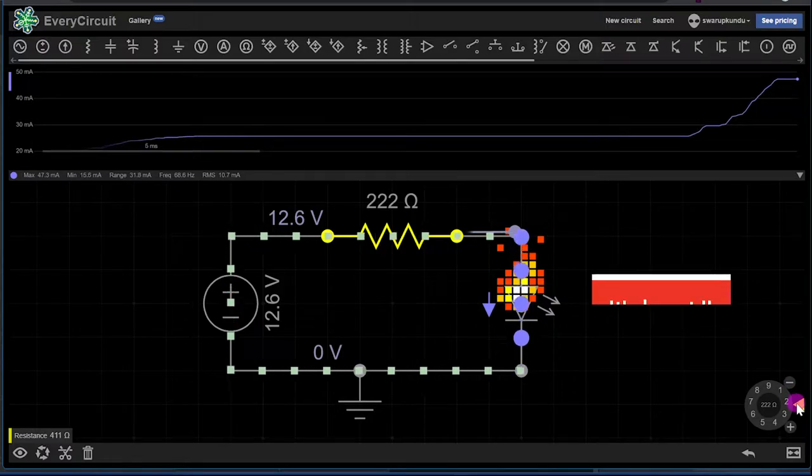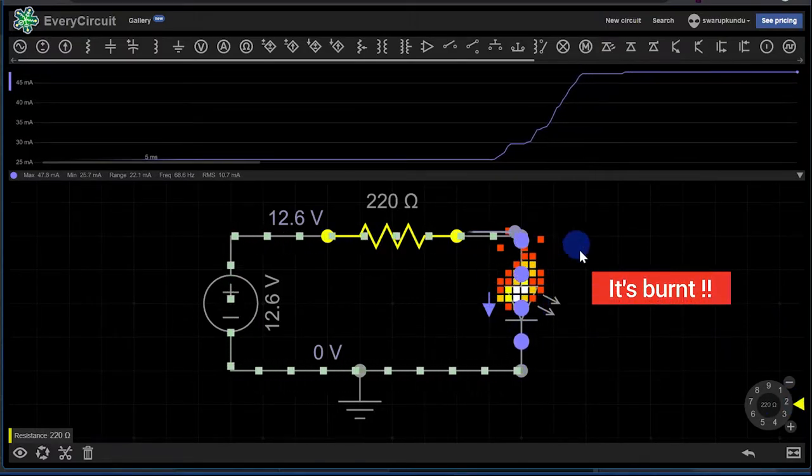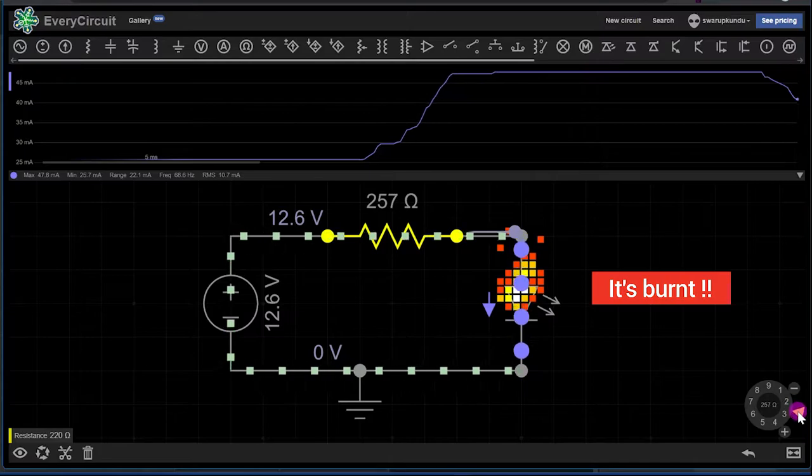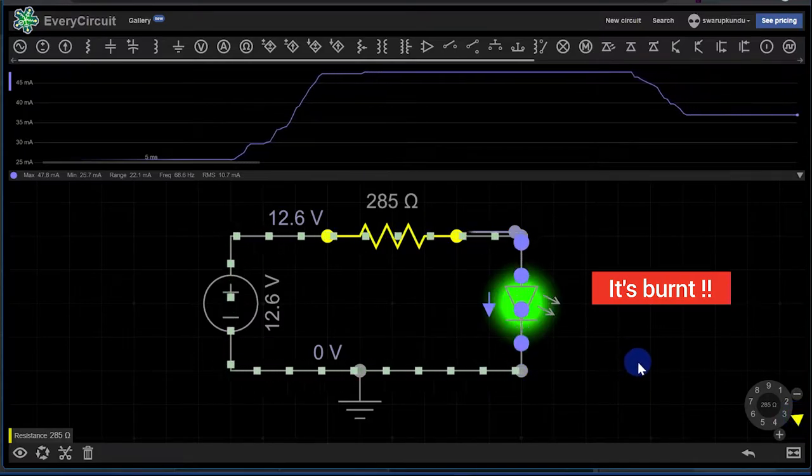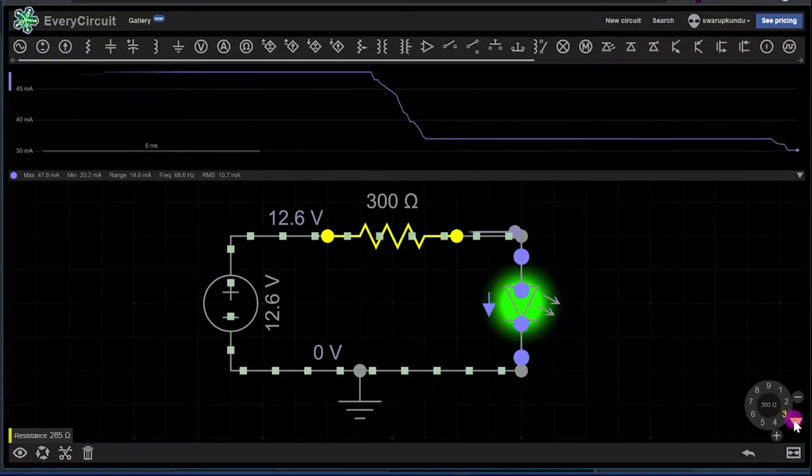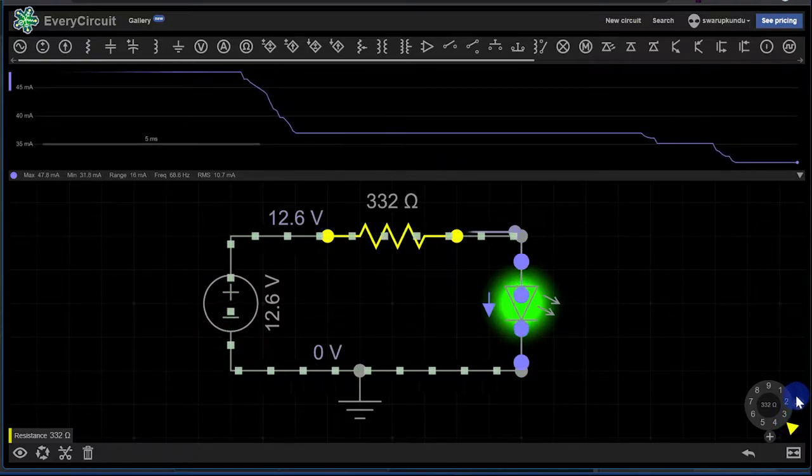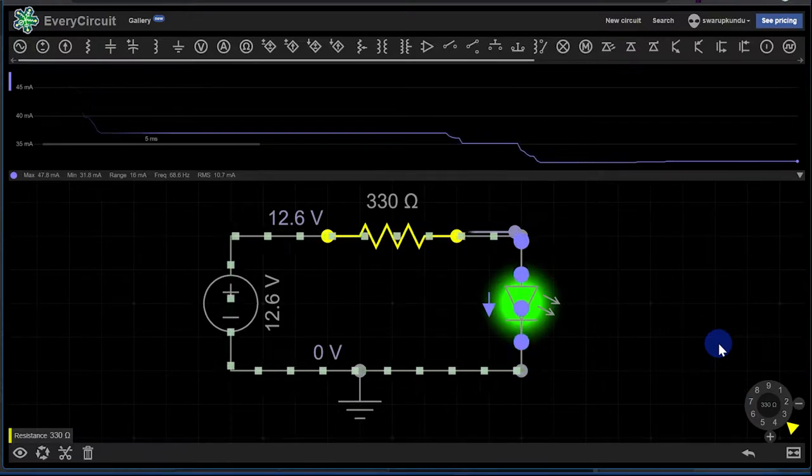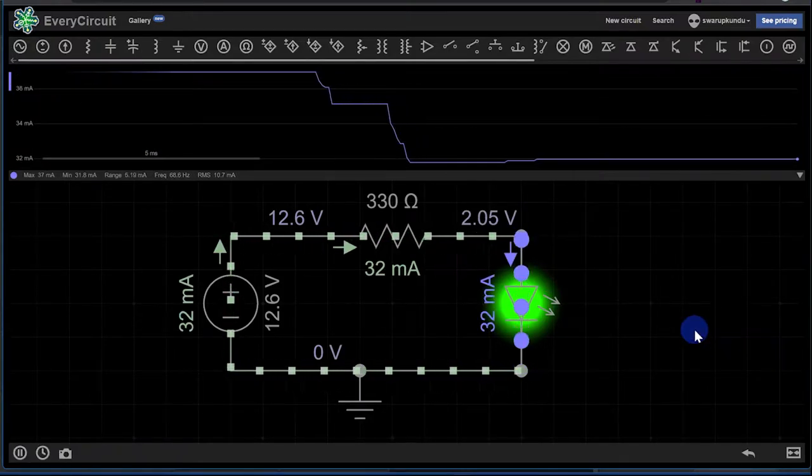Remember, LED is a current controlled device. If we pass higher current, at some point the LED will burn. See here, the LED got burned. A typical LED can tolerate about 40 milliamps of current. At 37 milliamps it's fine, but as we keep increasing the voltage they may burn. So always keep one resistance in series with the LED.